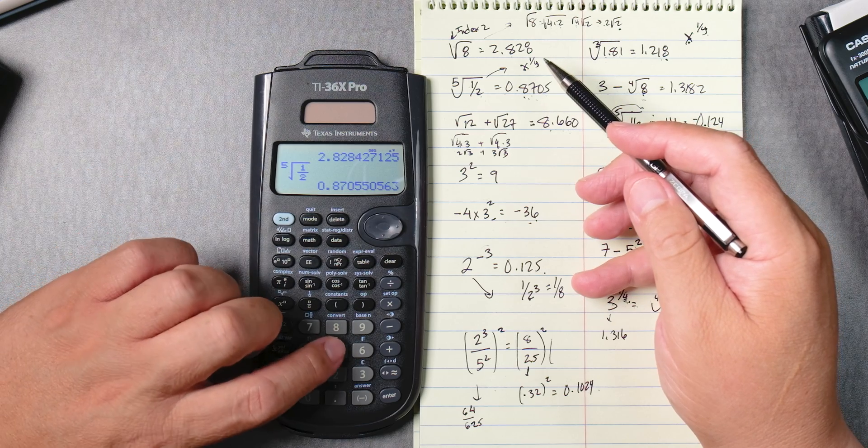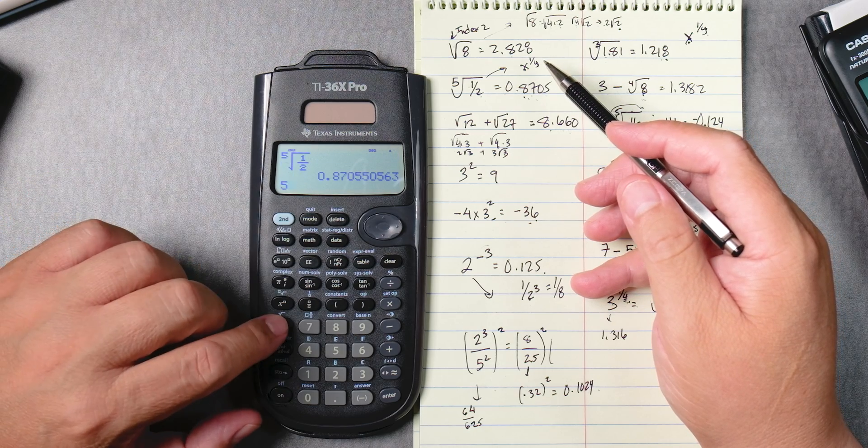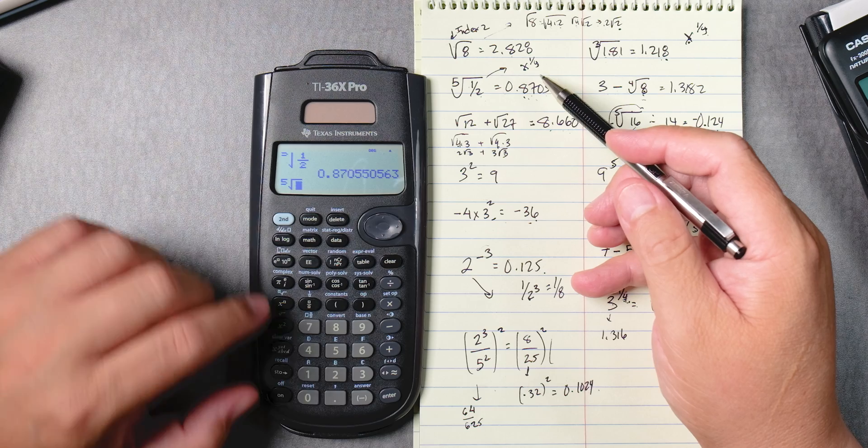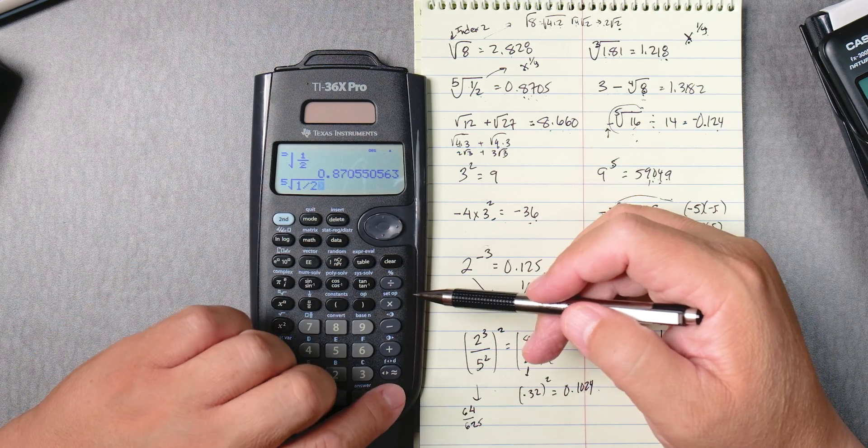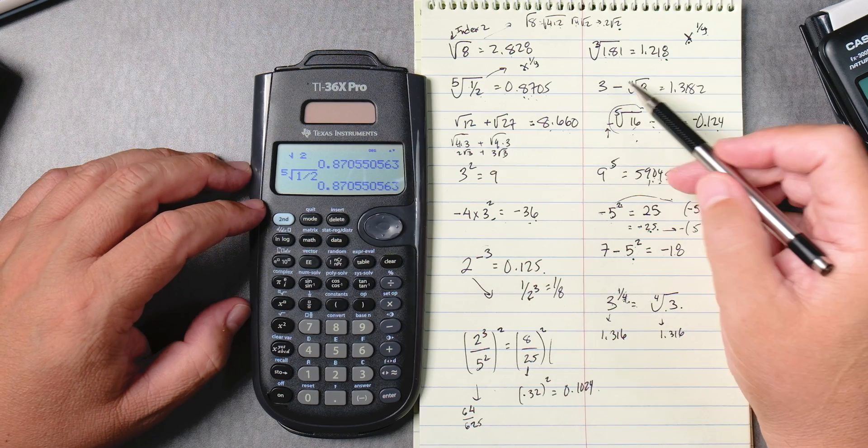You can also type 5 second, x to the box, 1 divided by 2. You can use division, enter, same answer.